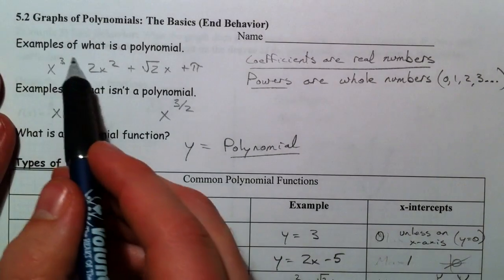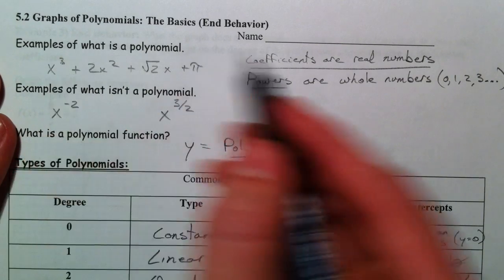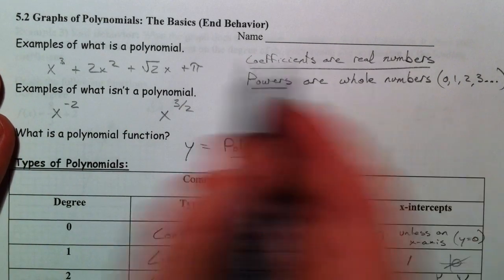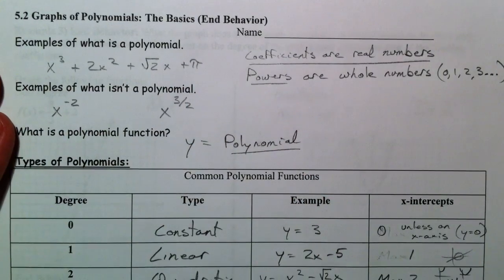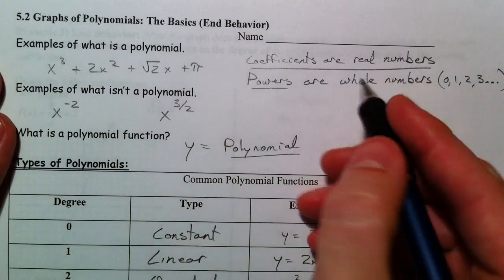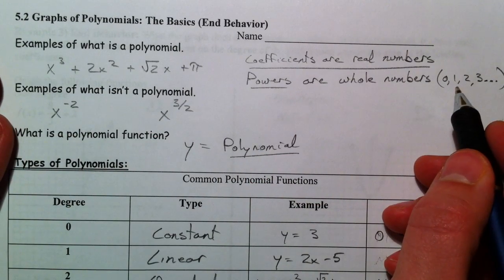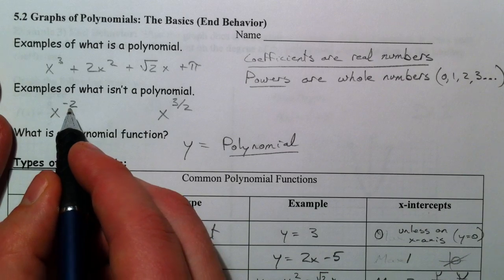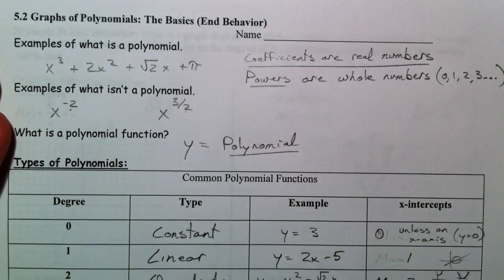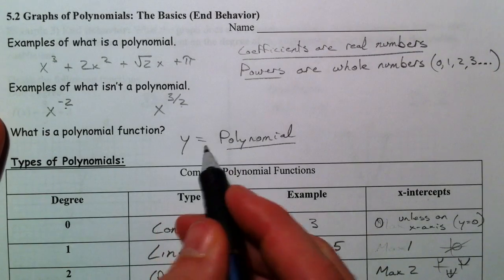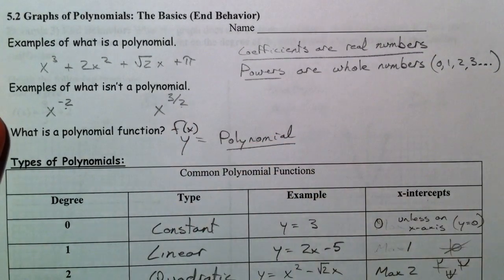An example of a polynomial: x cubed, 2x squared. Basically, coefficients have to be real numbers. So I can have a 1, a 2, a square root of 2, a pi, rational numbers, irrational numbers — I can have fractions as long as they are real numbers. No imaginary. Powers have to be whole numbers, so I can't have negative numbers or fractional exponents. A polynomial function is just when we say y equals or f of x equals that polynomial.